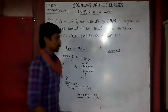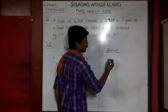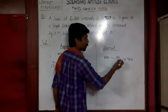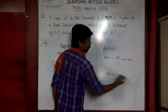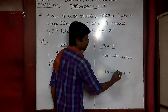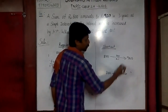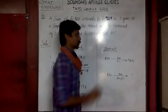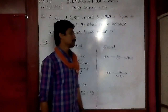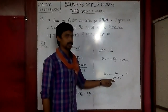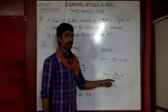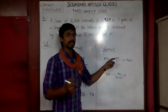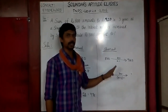Now the shortcut method. A sum of Rs.800 amounted to 920 in 3 years at some rate of interest X%. The same 800 amounts to what in the same 3 years if the rate is X + 3%? The interest is increased by 3% per annum. So in 3 years, the total interest increases by 9%.